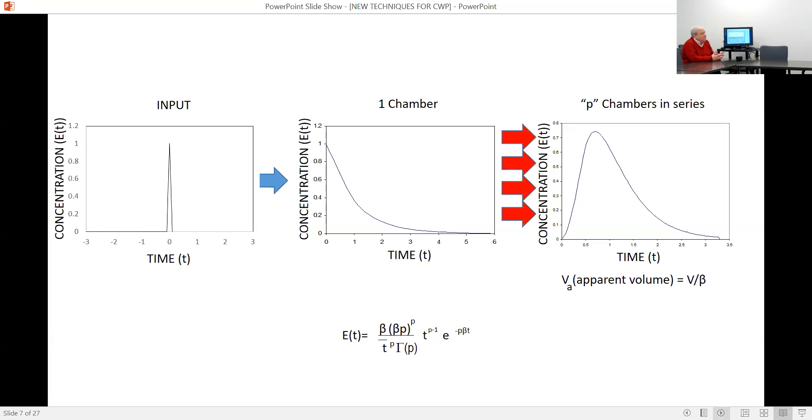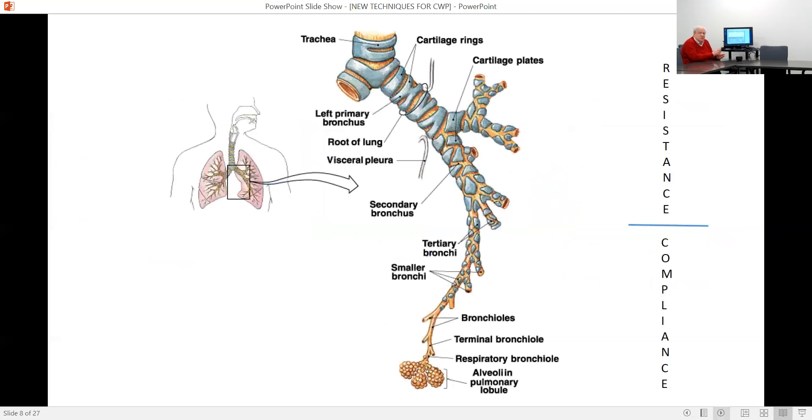And one of the parameters in the distribution is a value that we've called P here, just taking it from the chemical literature. And P is the number of chambers in series. So it tells you how many well-mixed chambers you've gone through, which tells you something about the mixing procedure. Along with that, there is another parameter beta, which is the apparent volume of the chambers. Now to sort of give away some of the talk, beta is really something that allows you to distinguish between asthma and bronchitis. Beta tends to be less than one for bronchitis and tends to be greater than one in asthmatics. So it distinguishes very nicely between the asthmatics and the bronchitis on that basis.